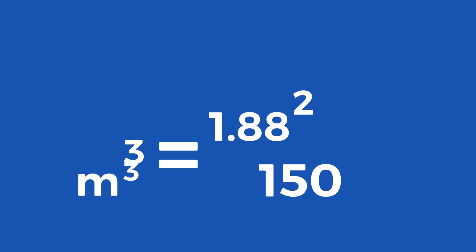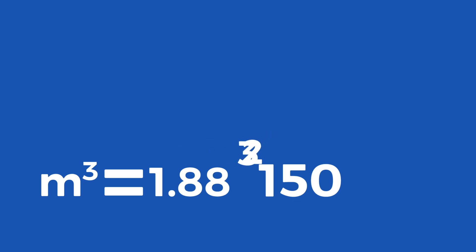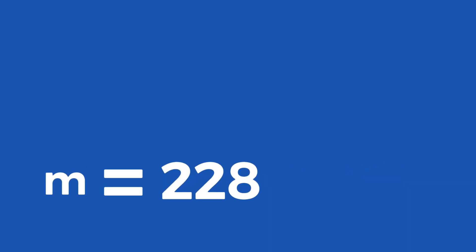We shuffle everything around to get m cubed equals 1.88 squared times 150 cubed. If we do all the math, we get that m cubed equals 11,928,600. We just need to do the cube root and we get m equals 228 million kilometres from the sun. That is how you use Kepler's equation to apply it to a different planet. I hope you learned how to use Kepler's formula here and I hope you enjoyed this video — thanks for watching.